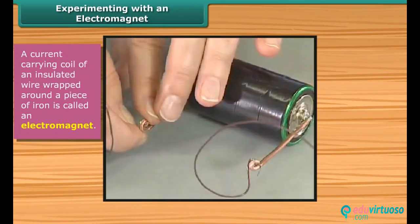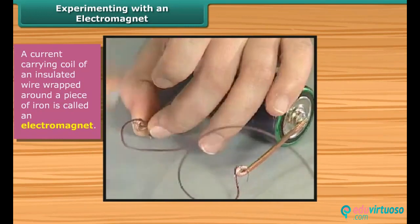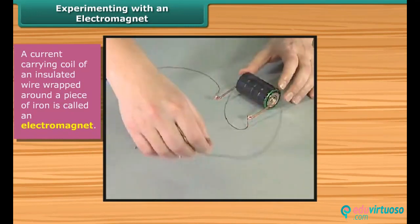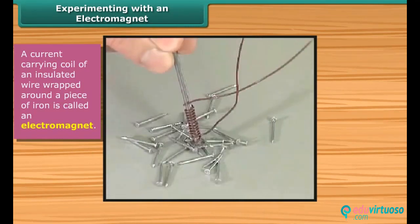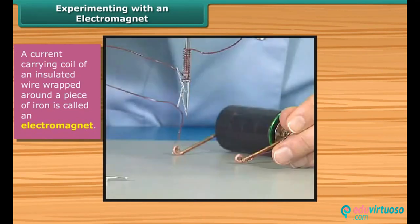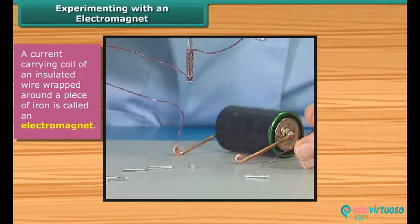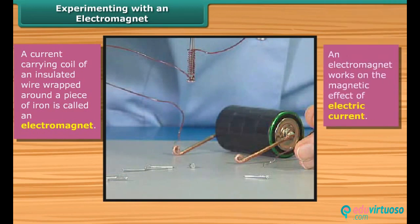The coil in the above activity behaves like a magnet when electric current flows through it. When the electric current is switched off, the coil generally loses its magnetism. Such coils are called electromagnets. Thus, an electromagnet works on the magnetic effect of electric current.